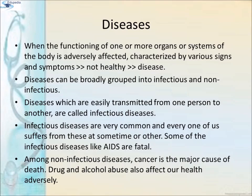Diseases: When the functioning of one or more organs or systems of the body is adversely affected, characterized by various signs and symptoms, we say we have a disease. Diseases can be broadly grouped into infectious and non-infectious diseases. Diseases which are easily transmitted from one person to another are called infectious diseases. Some infectious diseases like AIDS are very fatal. Among non-infectious diseases, cancer is the major cause of death. Drug and alcohol abuse also affect our health adversely.